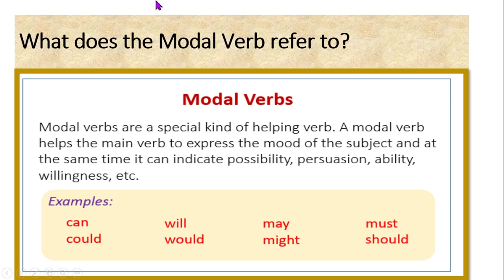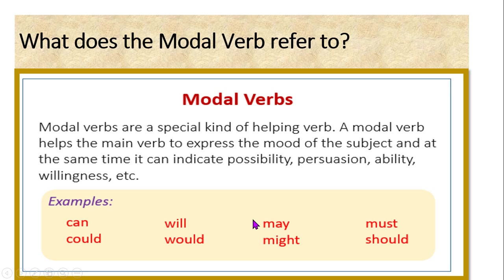Now let's move on to our important topic: modal verbs. What does the modal verb or modal auxiliary refer to? A modal verb is a special kind of helping verb and it helps the main verb to express the mood of the subject. At the same time it can also indicate possibility, persuasion, ability, willingness, and so on. We will discuss all different functions and their implied meanings one by one, step by step. Please watch the video completely so that you will get crystal clarity on the usage of each modal verb.